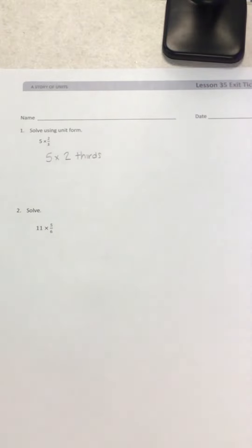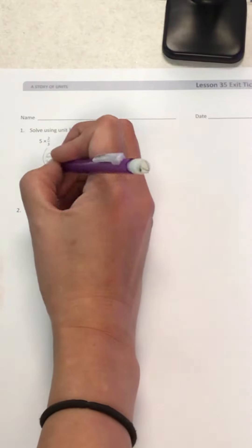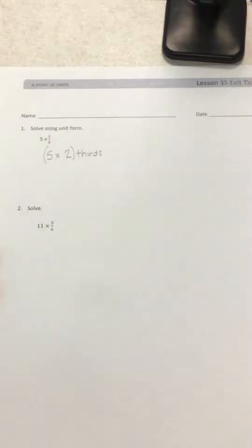Now remember, the associative property tells me that I can group my numbers together. And I'm just going to do that right here. I'm going to group those together, and that tells me how I will multiply.